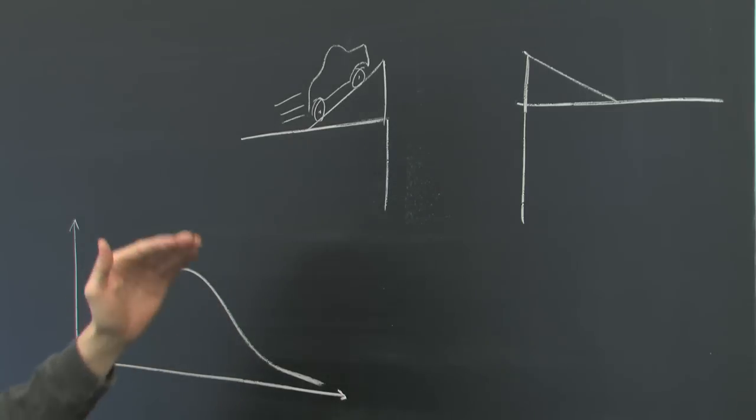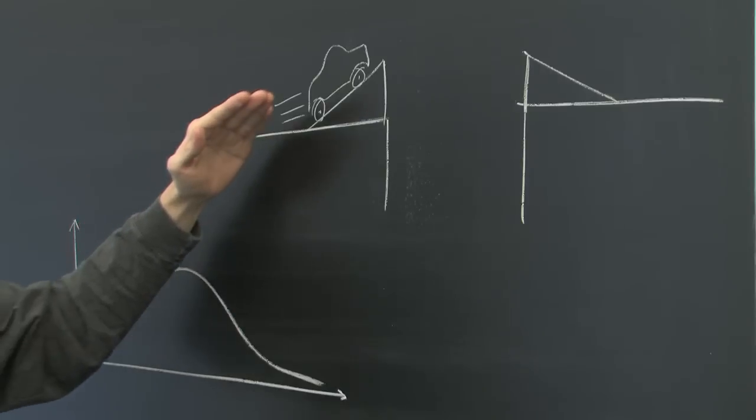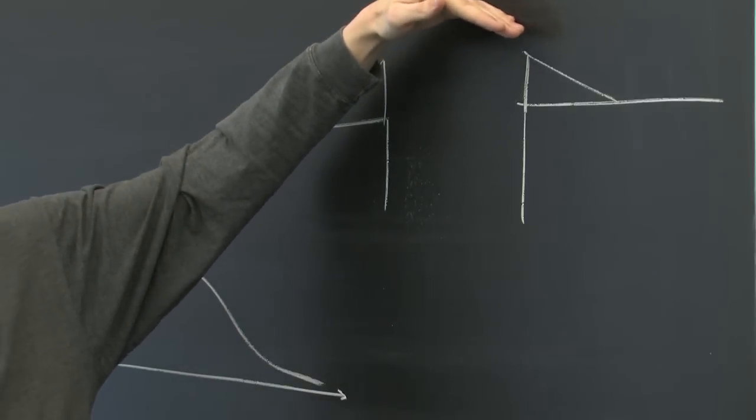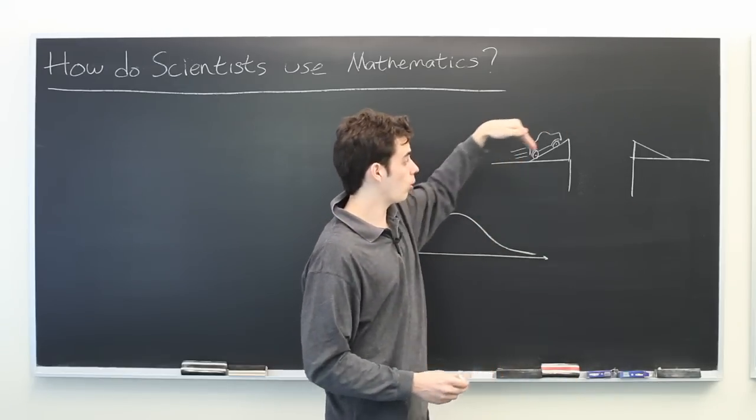A natural question to ask might be how fast does the car want to be going, such that it will make it just over the gap and land smoothly on the other ramp, not overshooting it or undershooting it.